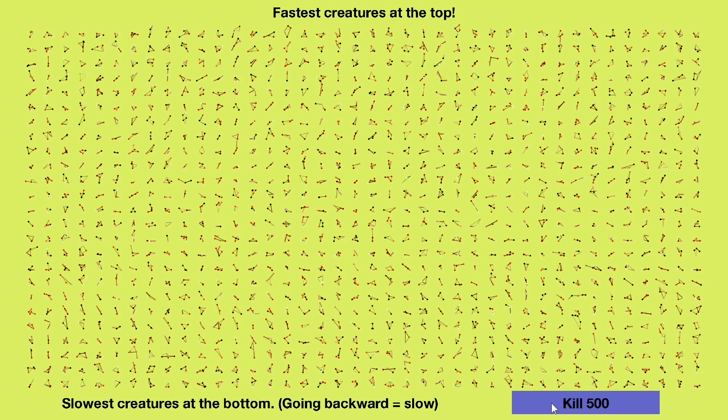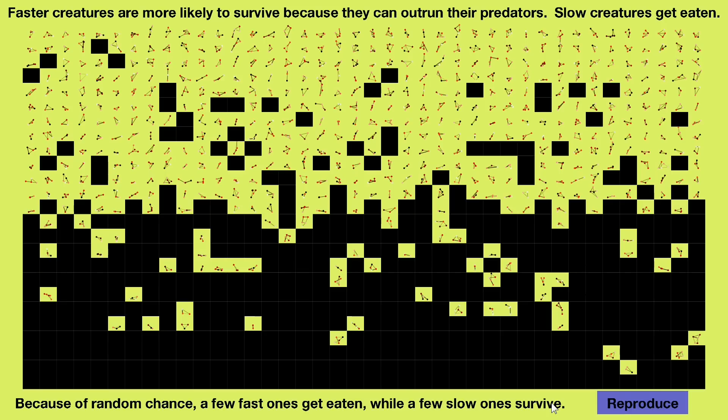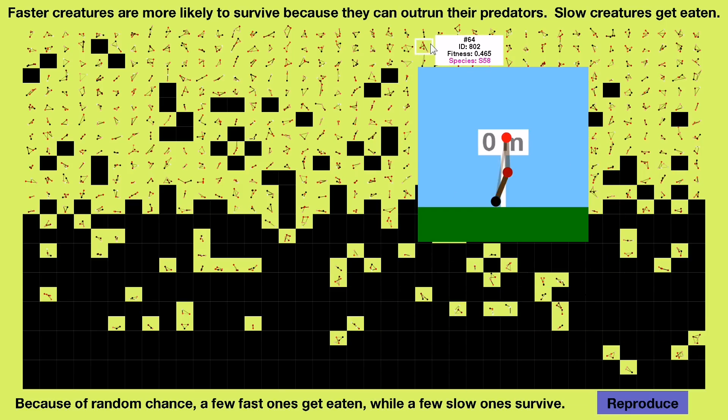Okay, let's kill the 500 slowest creatures. Boop. To be specific, there's a slight gradient allowing some lucky slow creatures to survive and some unlucky fast creatures to die. But overall, the faster you are, the more likely you are to survive.